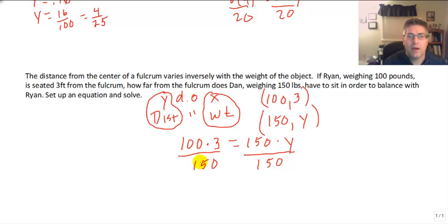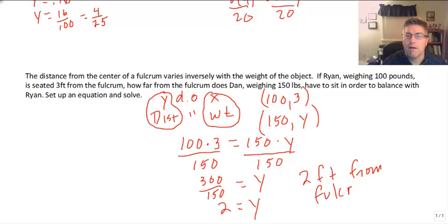And 100 times 3 is 300 divided by 150. And a little bit of mental math tells us that y is equal to 2. So it looks like Dan's got to be seated 2 feet from the fulcrum of our teeter-totter.